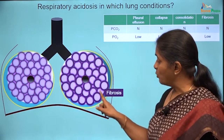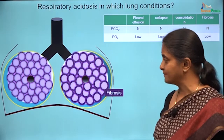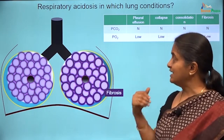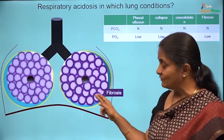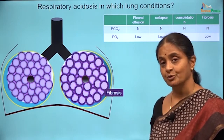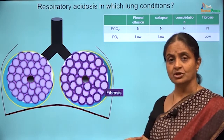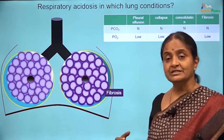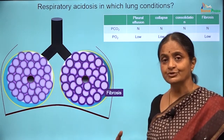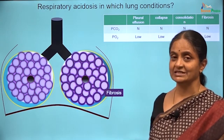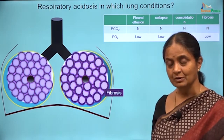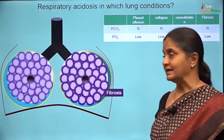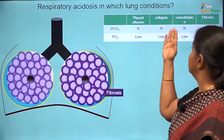Fibrosis is a condition where the alveolar walls are thickened — there is more fibrous tissue in the alveolar walls, shown here alongside a normal one for comparison. In fibrosis, there need not be a change in carbon dioxide levels. A thickened membrane will affect oxygen transport but not necessarily carbon dioxide transport. Only if the fibrosis is extensive — the compliance is so low that despite respiratory effort the lung is not expanding, or the respiratory muscles go into fatigue — only then will ventilation be affected and respiratory acidosis ensue.